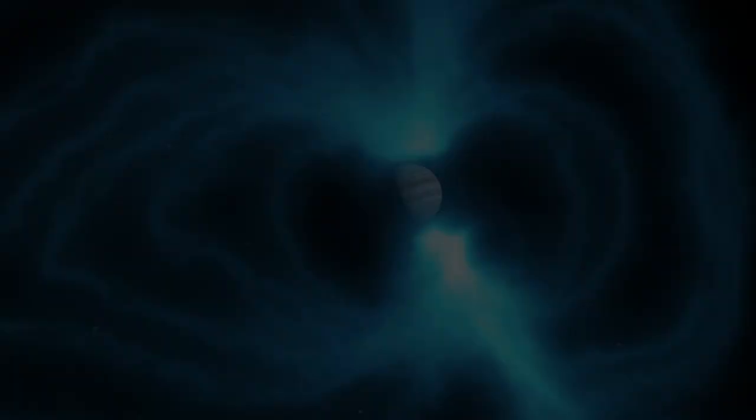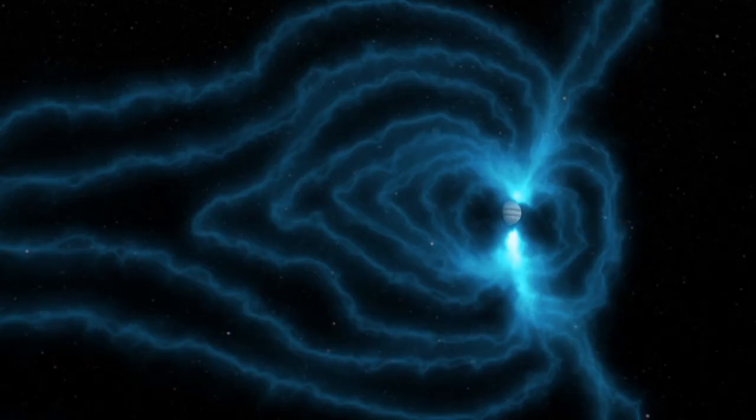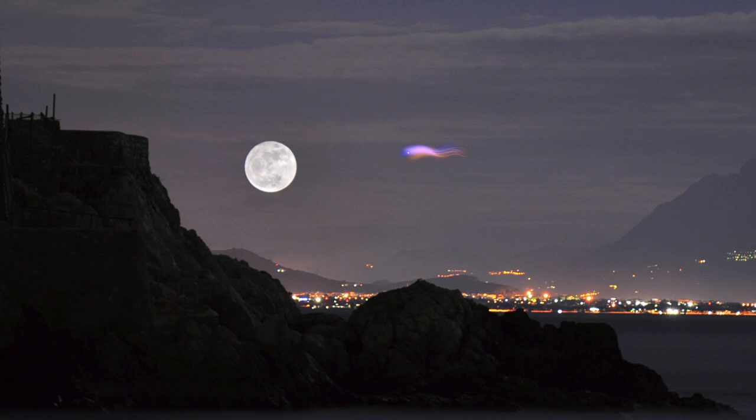Jupiter is also the planet with the largest magnetic field. Its magnetosphere is huge. If you were to look up into the night sky and if you could see the outline of its magnetosphere, which you can't, it would be about the size of the moon in the sky. It's a very, very large magnetosphere.